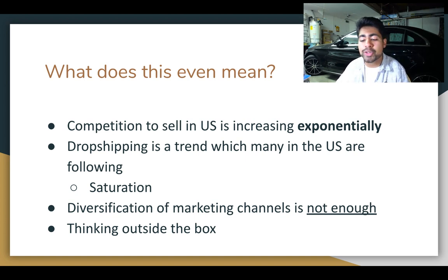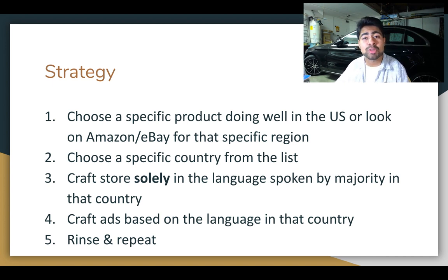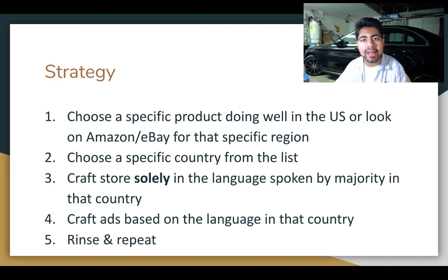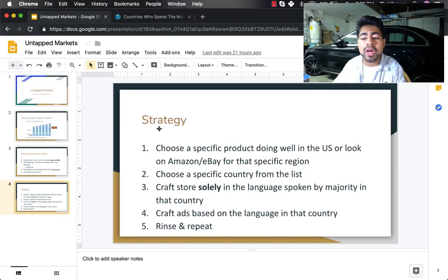This is where marketing to another country comes into play. There's a very simple strategy as to how this is all done. I've personally started developing stores which revolve around these other markets and I'm already seeing a high ROAS coming in. I have friends online who have used this strategy in the past and they've been able to scale profitably for months — not just a few weeks — up to six figures, even seven figures. The strategy goes like this: the first step is to simply choose a specific product doing well in the United States, or look on Amazon or eBay for a specific region to find a product you can build a store around for a different market.